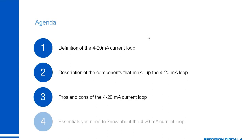To do that, we're going to follow this agenda: define the 4-20mA current loop, discuss the individual components at length, review the pros and cons so you'll know why people use it and why sometimes they don't, and cover the essentials you should walk away with so you know what to keep an eye out for when working with 4-20 loops in process applications.